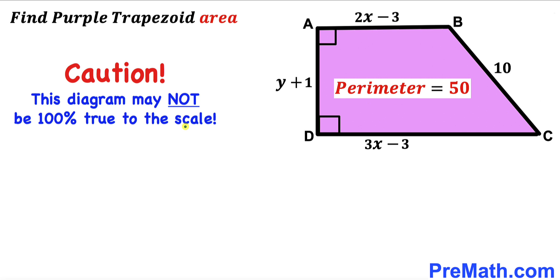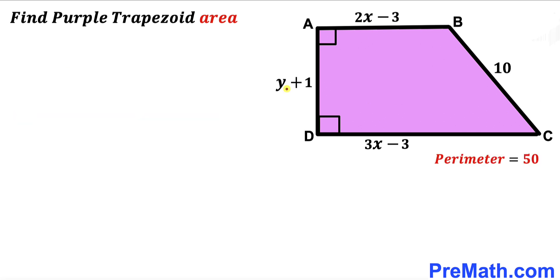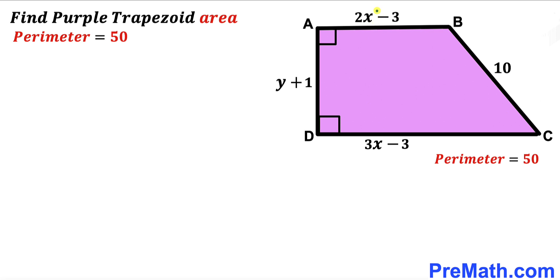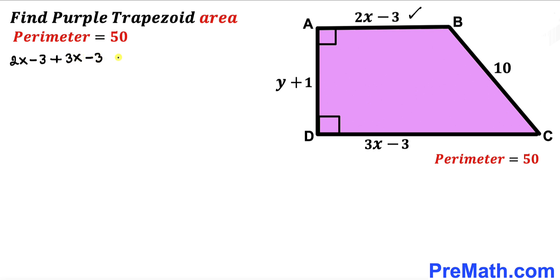Please keep in mind that this figure may not be 100% true to scale. Before we can calculate the area of this purple trapezoid, we must find the values of x and y. We know the perimeter is 50, and the perimeter equals the sum of all side lengths. So I'm going to add all the side lengths: 2x minus 3, plus 3x minus 3, plus y plus 1, plus 10 equals 50.